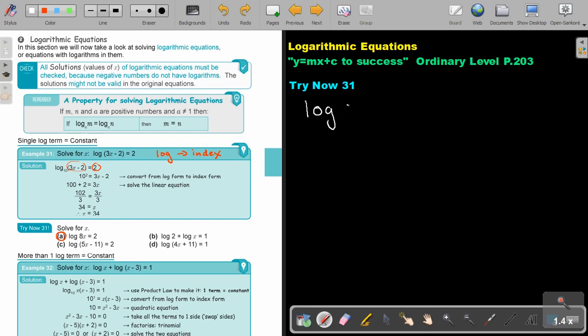So let's just start. It's going to be log 8x equals 2. So the base will be 10. Now from log form to index, I will swap this side. So 10 to the 2 equals 8x. And then it's 100 equals 8x. I divide 8, I divide 8. So therefore, the value of x will be 12.5.